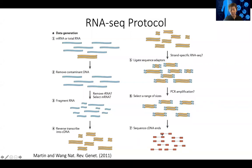For example, if we do paired-end sequencing, we will sequence from this sequencing adapter and read the beginning bases on this strand. We can also use the other sequencing adapter and sequence the reverse strand. What you will get is pairs of reads for this particular fragment. That's the basic RNA-seq protocol.